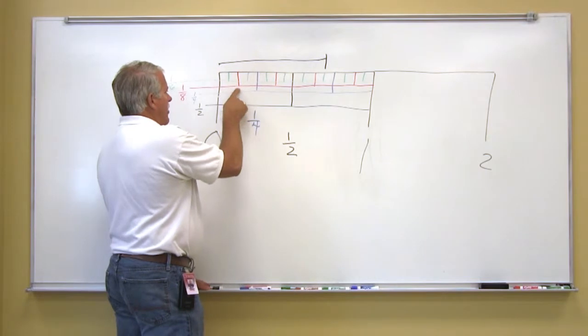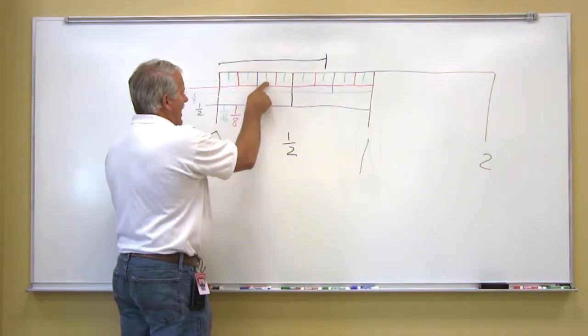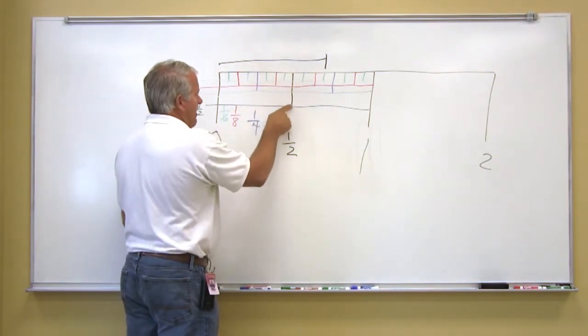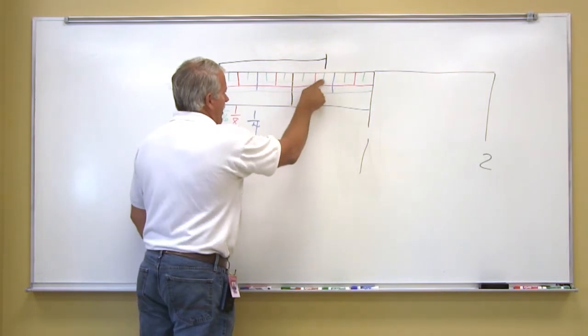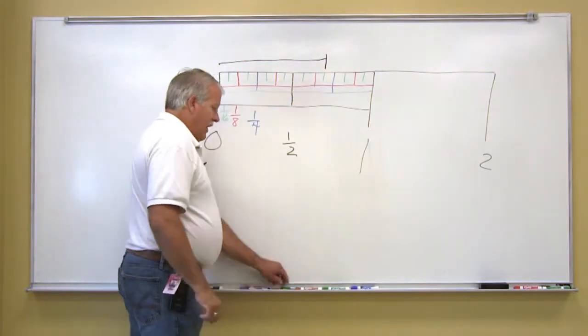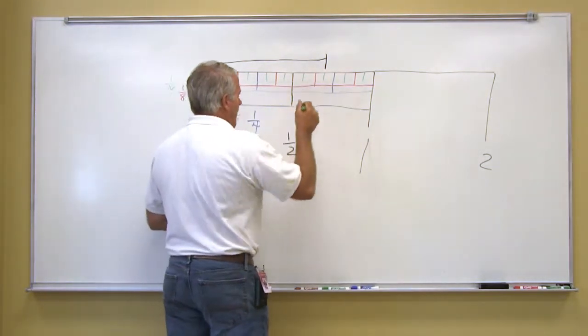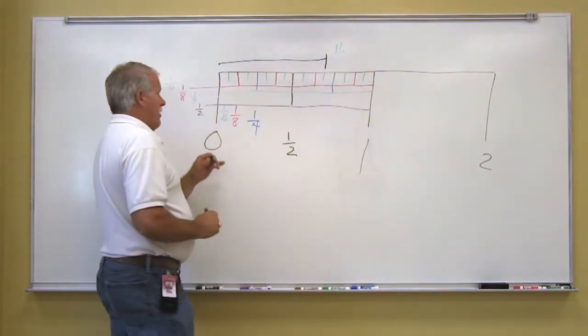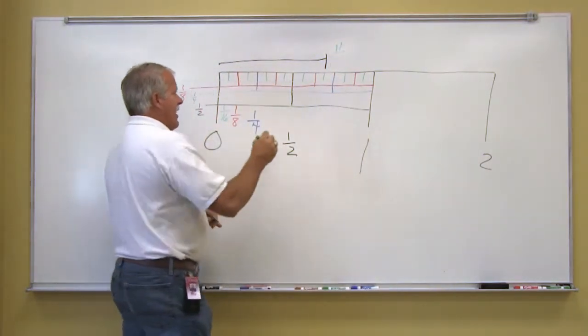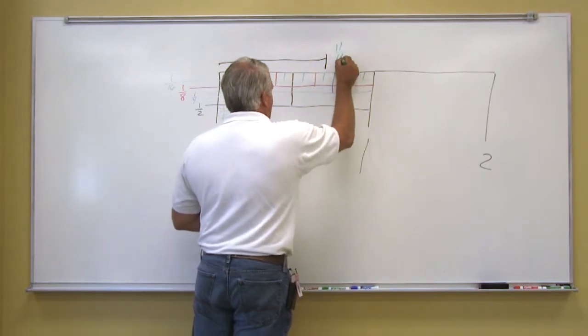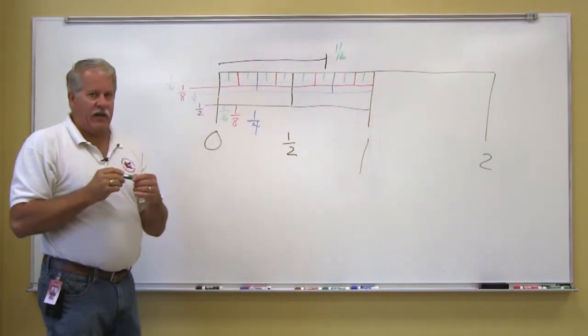So we would have one, two, three, four, five, six, seven, eight, nine, ten, eleven. So we have eleven and it's on one of the green marks. So we know if it's on a green mark it's going to be a sixteenth. So that length of that line would be eleven sixteenths.